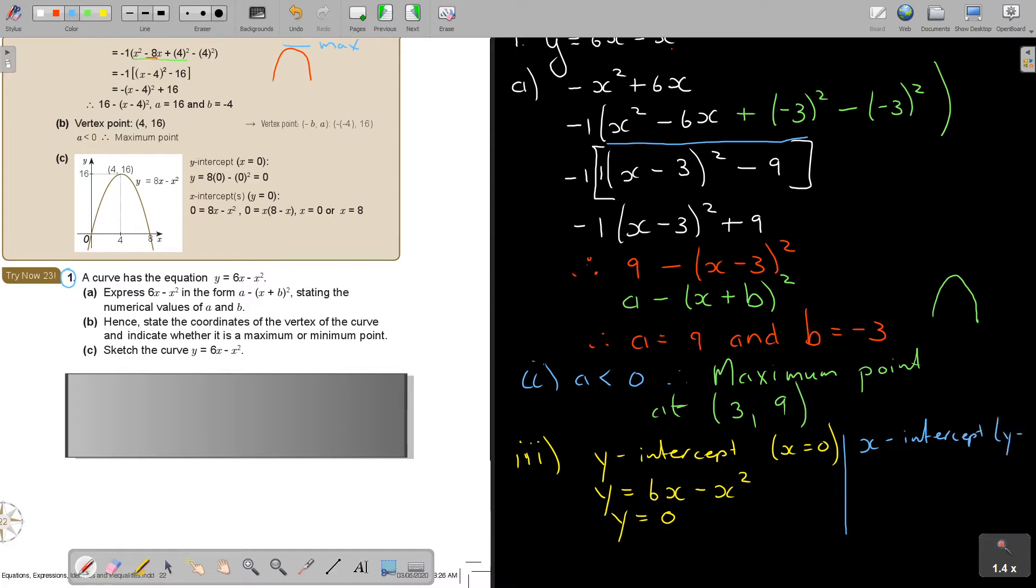And then you say the X intercept, Y is equal to 0. So 0 equals 6X minus X squared. So X times 6 minus X. Therefore X equals 0 or X is equal to 6.